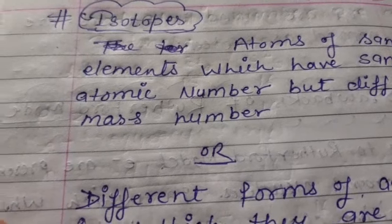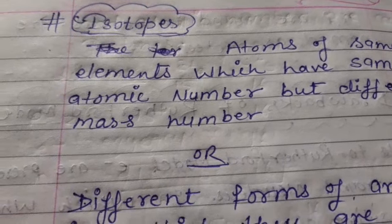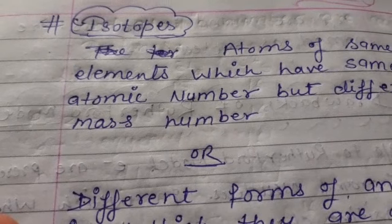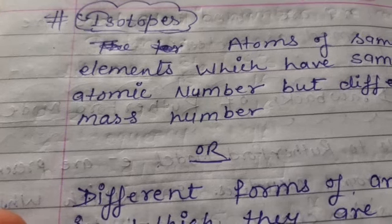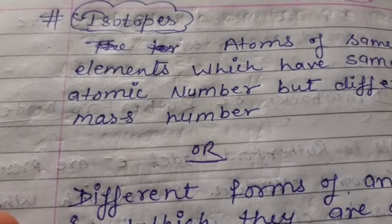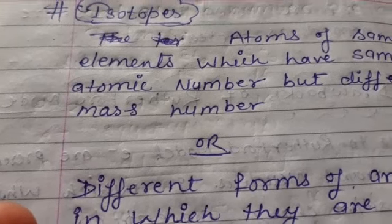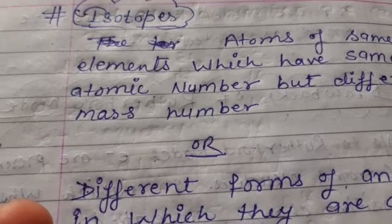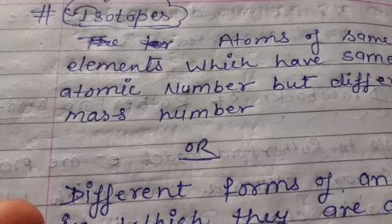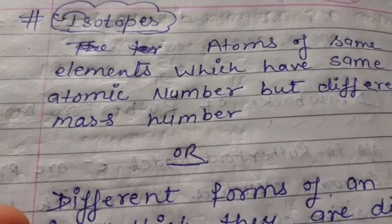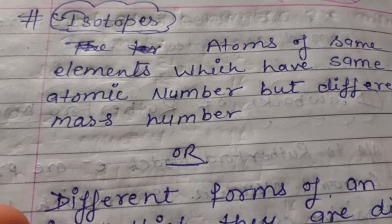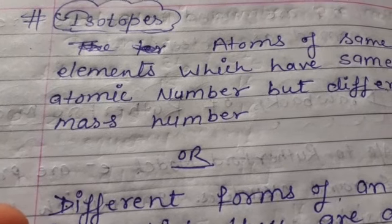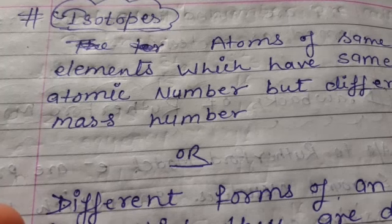Some alpha particles are deflected at a few angles due to electrons, some pass straight through due to empty space, and some come back due to the nucleus. He compared the attraction force between nucleus and electron with the solar system — the gravitational force F = Gm₁m₂/r² and the Coulombic electrostatic force F = kq₁q₂/r².